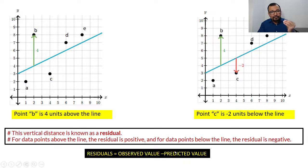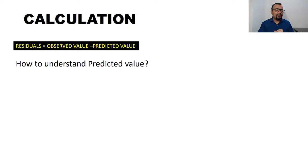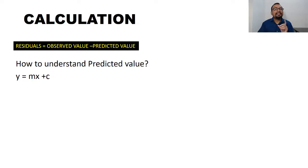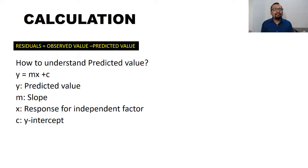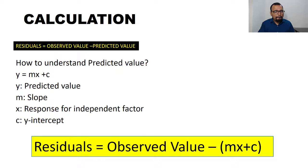The observed value is clear — whatever response you are getting for the peak area is our observed value. For the predicted value, we use the equation of a linear line: y = mx + c, where y is the predicted value, m is the slope, x is the independent variable such as concentration, and c is the y-intercept. So the residual equals observed value minus (mx + c).